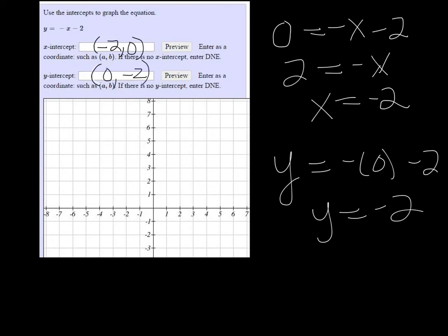And then if we plot them each, negative 2, 0, and 0, negative 2, my line looks like this.